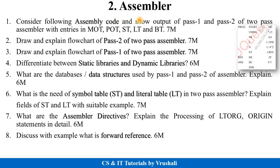The next topic is assembler, where they will ask a numerical question. The first question is: consider the following assembly code — this assembly code will be given in your exam — and show the output of pass one and pass two of a two-pass assembler with entries in MOT, POT, ST, LT, and BT tables. You have to generate all these tables with their entries. This question is generally asked for seven to eight marks. The question format is the same; only the code differs. You should prepare this question compulsorily.